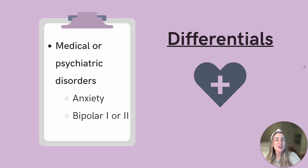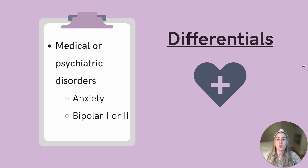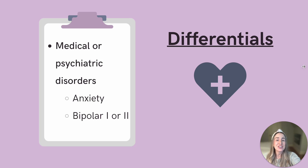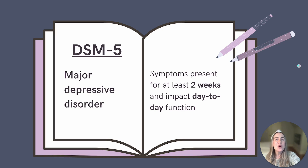Depression can occur alone or in combination with other medical or psychiatric disorders. Some medical disorders mimic depression, like hypothyroidism or even Parkinson's disease, so it's important to look at the patient comprehensively. Anxiety often co-occurs with depression, so it's really important to always ask about symptoms of anxiety, as this could change the treatment plan. Also assess for any symptoms of hypomania or mania that would suggest bipolar disorder, such as elevated mood, decreased need for sleep, impulsivity, and increased activity.